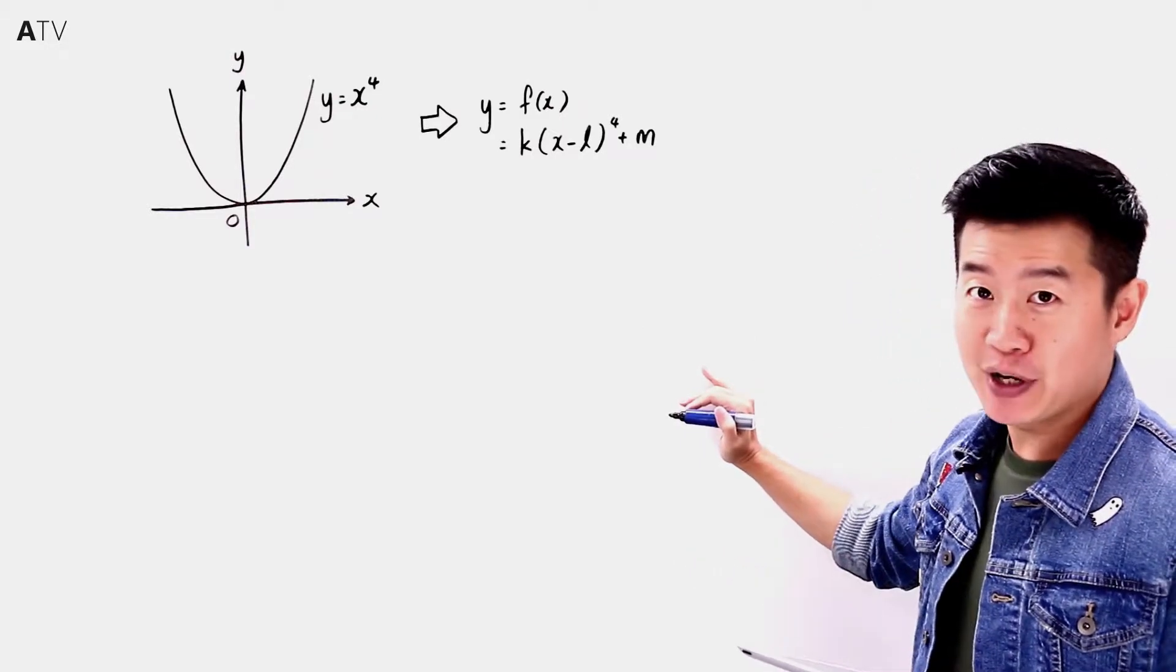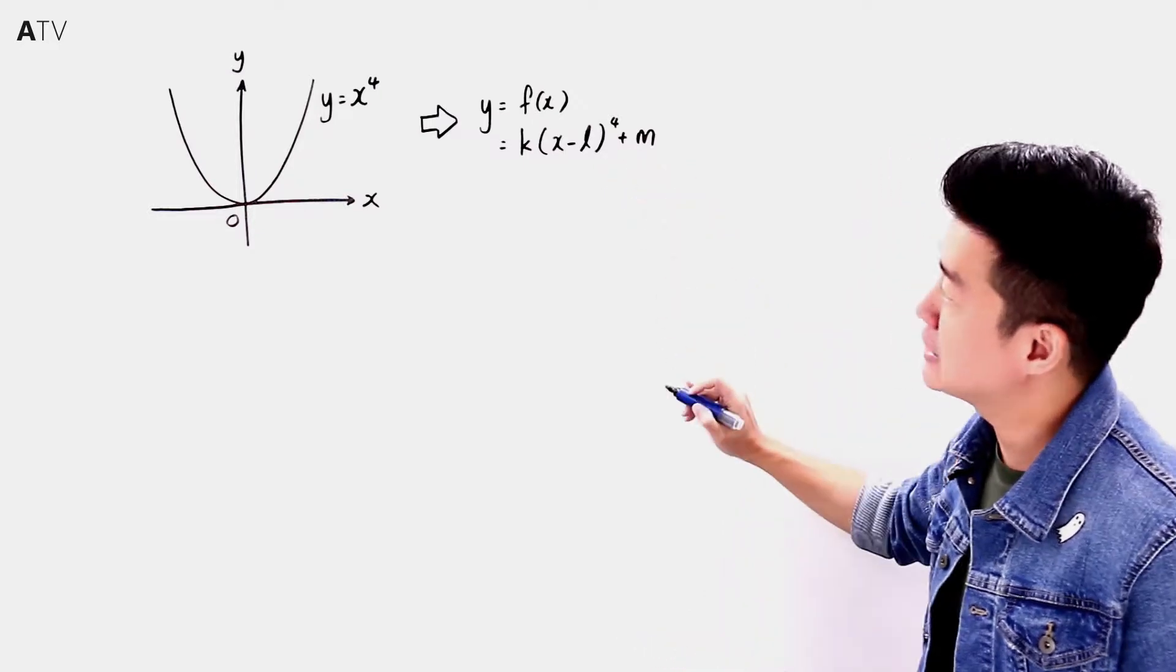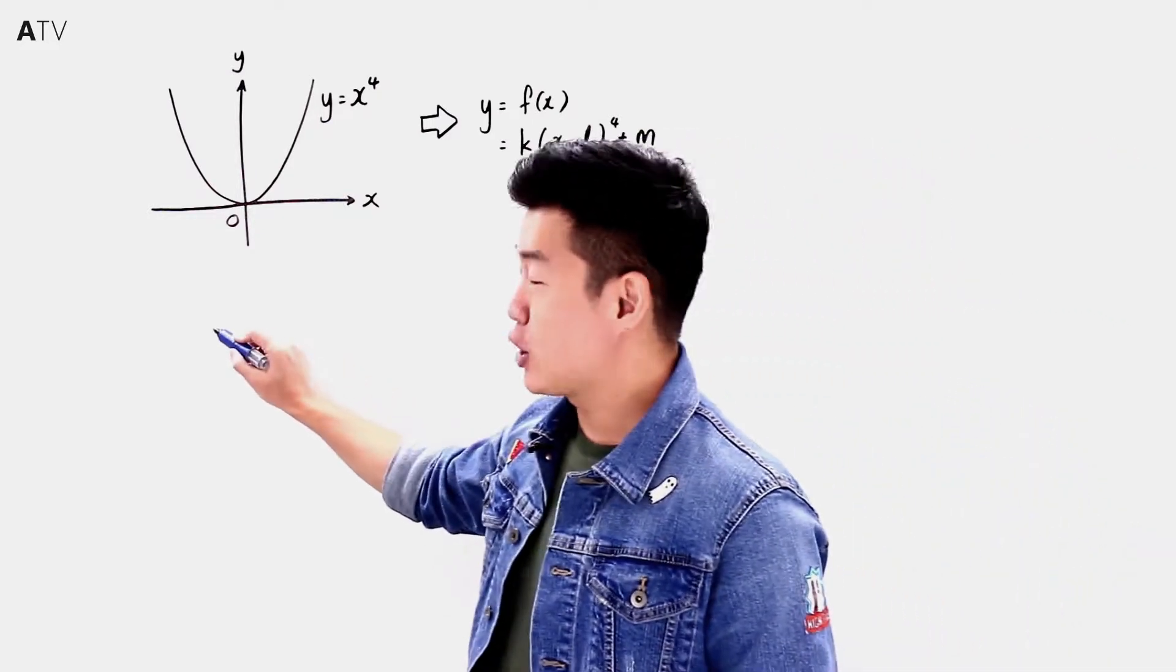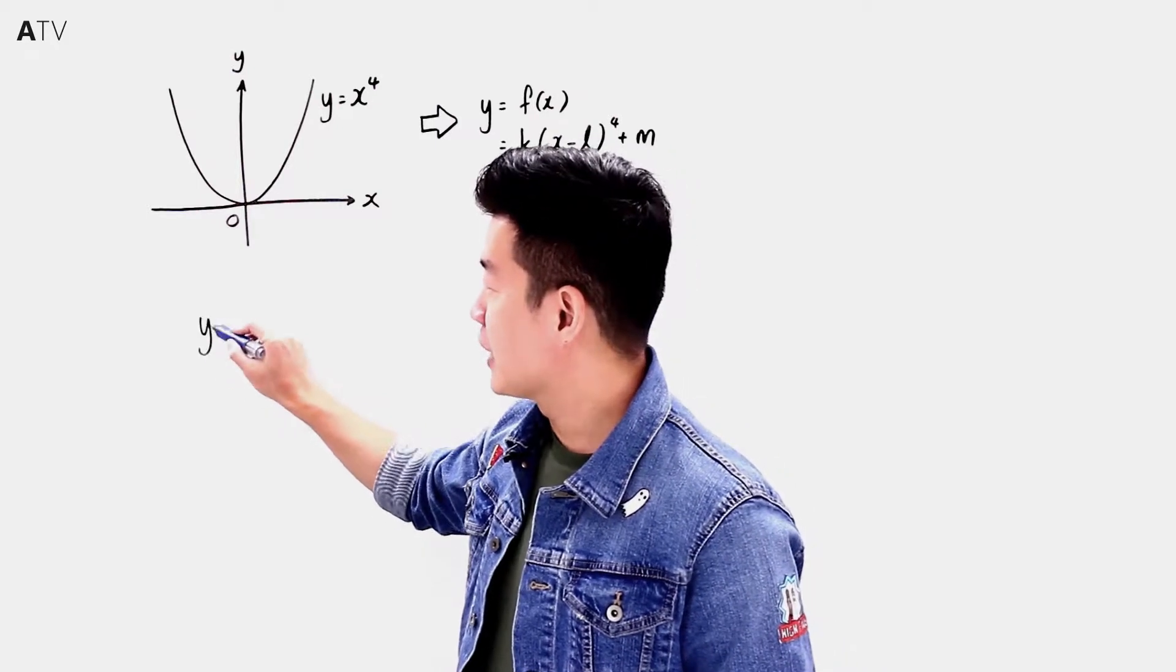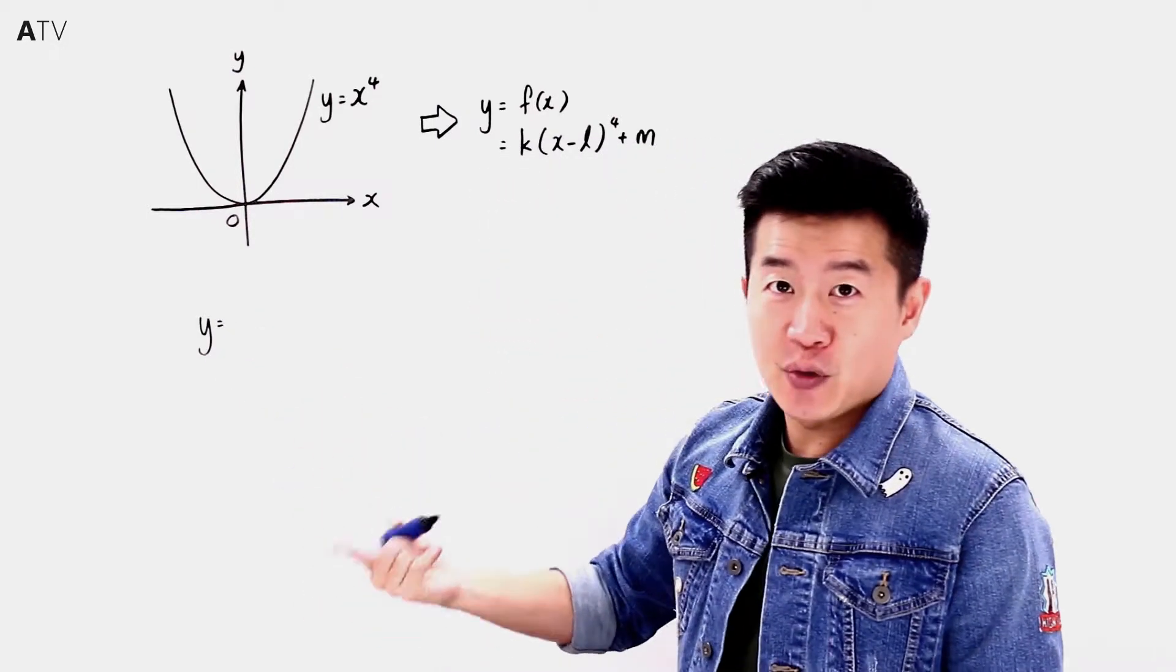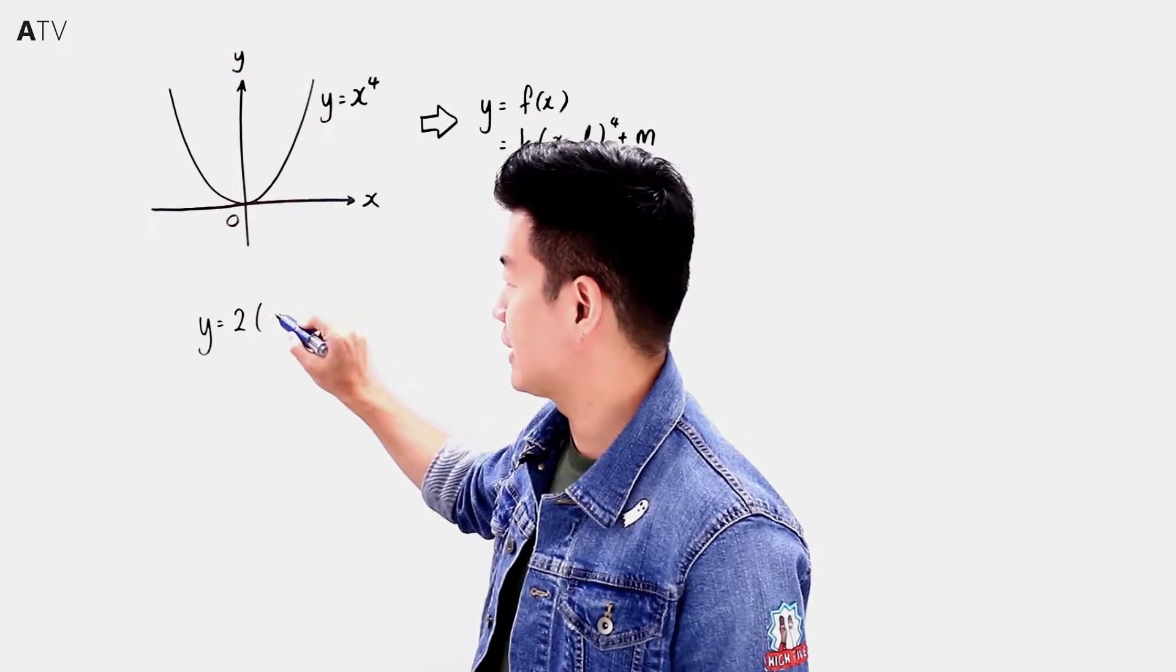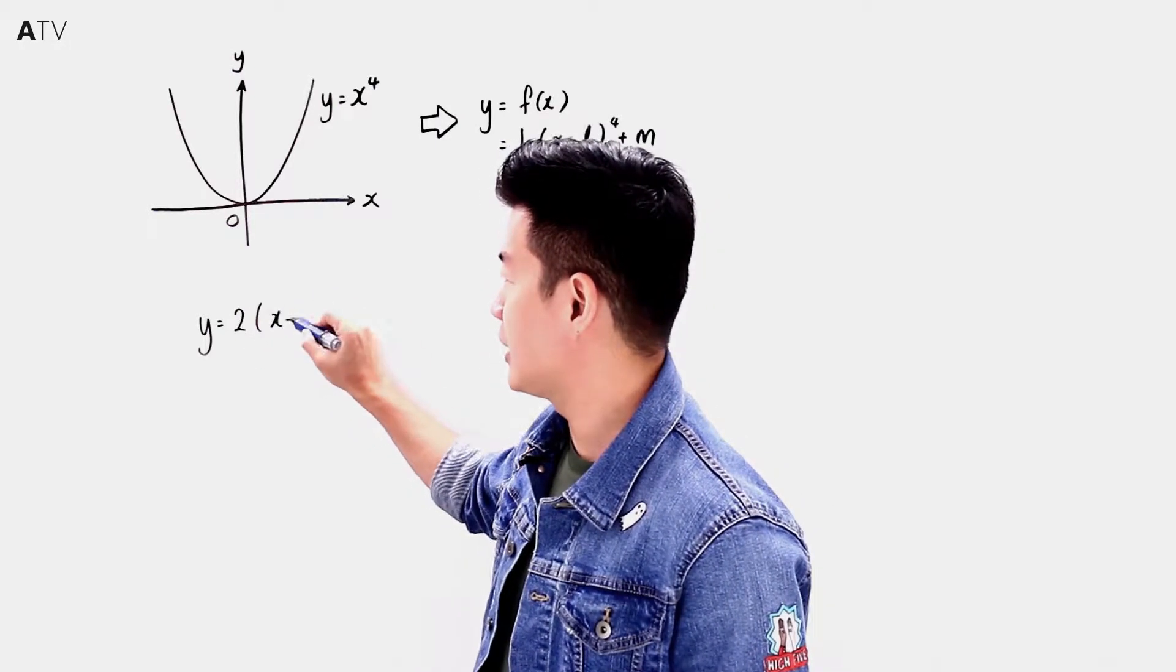It is easy to observe the turning point of this curve. Recall what you did in secondary school for quadratic expressions - we can always re-express through the completing the square process. For example, 2(x - 3)² + 4.